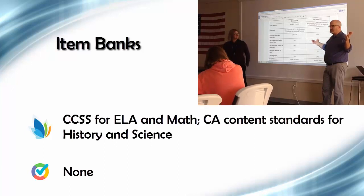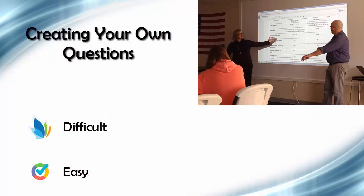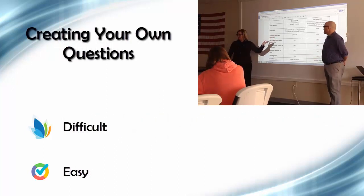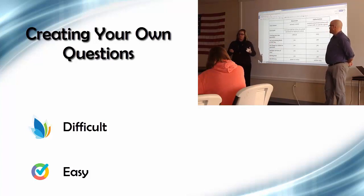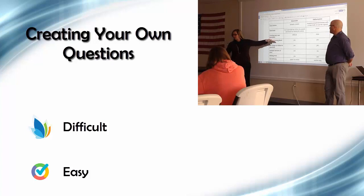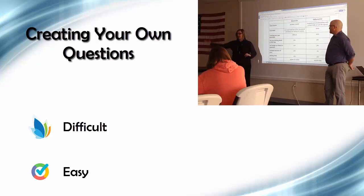GoFormative has no pre-made item bank at all. For creating your own questions in Illuminate, the short answer is it's a challenge. You type in the stem, type in all the distractors, link it to standards, publish it to your item bank, and then go back in and build an assessment out of those items. It's an investment of time — maybe good for a cross-departmental project where you really want to create your own content to give kids online.